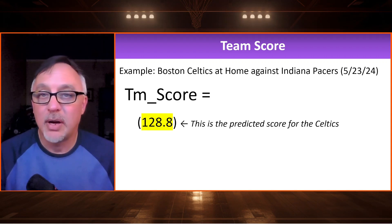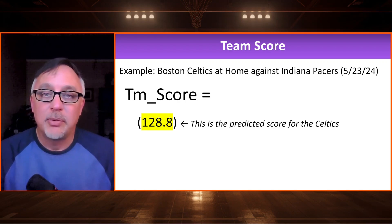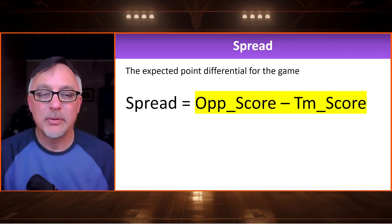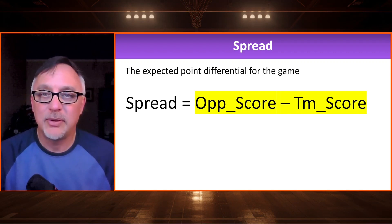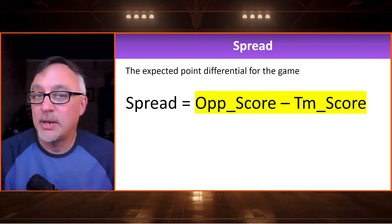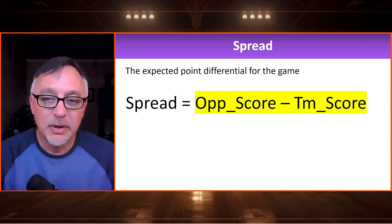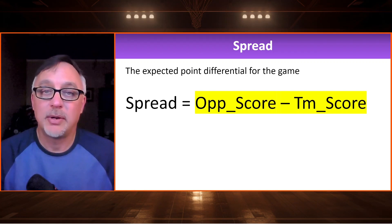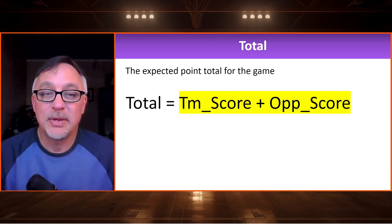We could do the same thing for the Pacers, but for this video we're just looking at the stats and how to make predictions from them. The spread is easy — we take the predicted opponent score minus the predicted team score. We use opponent minus team so that the favorite ends up with a negative number in front of it, as is standard in betting. The total is just as easy: team score plus opponent score. Once we have those two predictions, it's simply addition or subtraction.